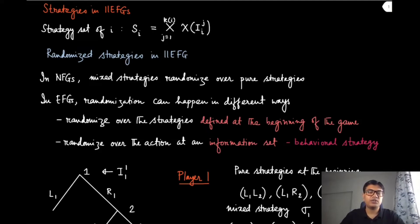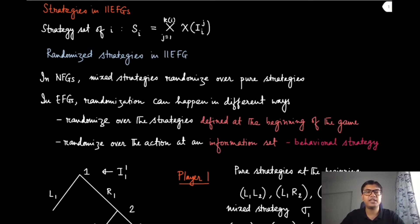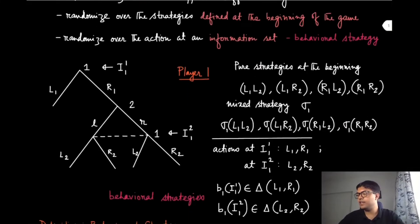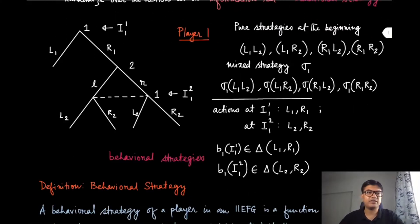In the case of imperfect information extensive form games, we will have to go for randomized strategies, and that randomization can happen in two different ways. Let us look directly at an example and see what the difference between these two types of randomization is.